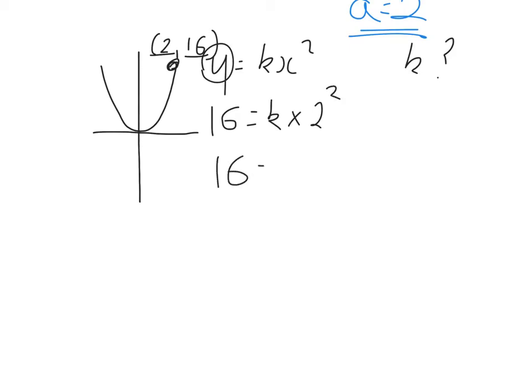So I get 16 equals 4K, and K is equal to 16 over 4, which is 4. Just a straightforward substitution question — very easy.